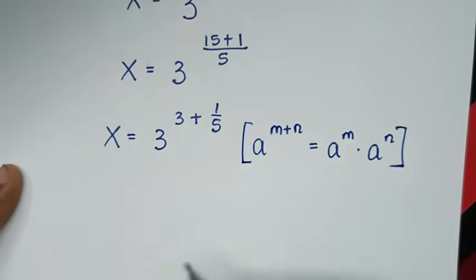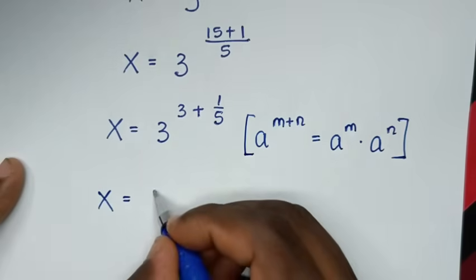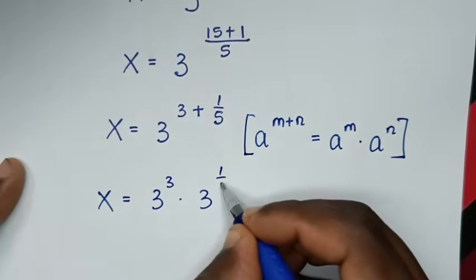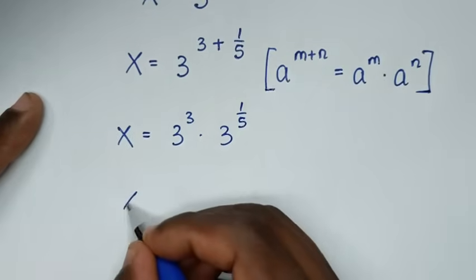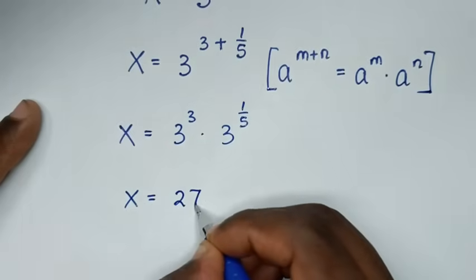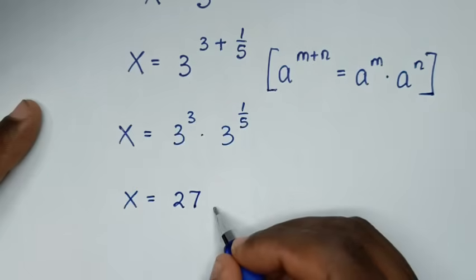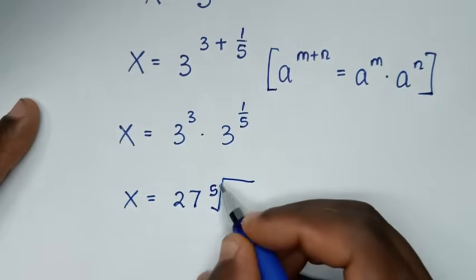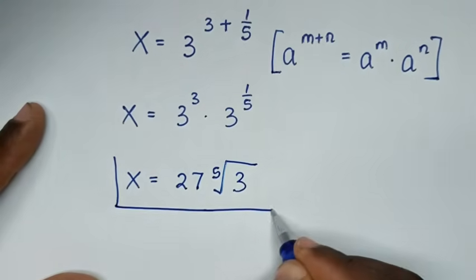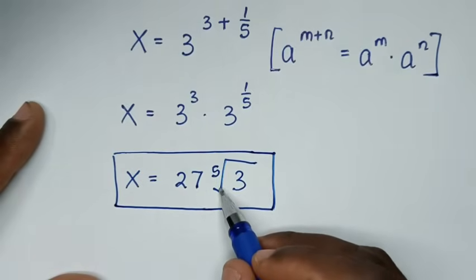Then we apply this rule here, so it will be x is equal to 3 to the power of 3, times 3 to the power of 1 over 5. So it will be x is equal to 3 to the power of 3 — which is 27 — times 3 to the power of 1 over 5, which is the same as the 5th root of 3. So the final answer for the value of x is 27 times the 5th root of 3.